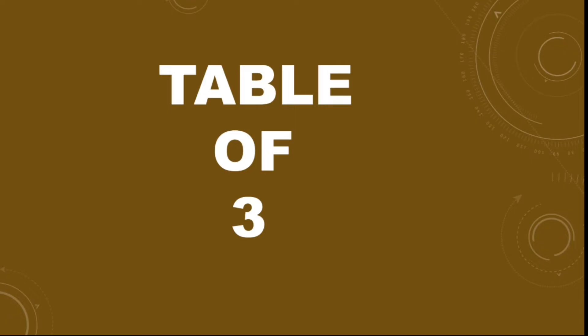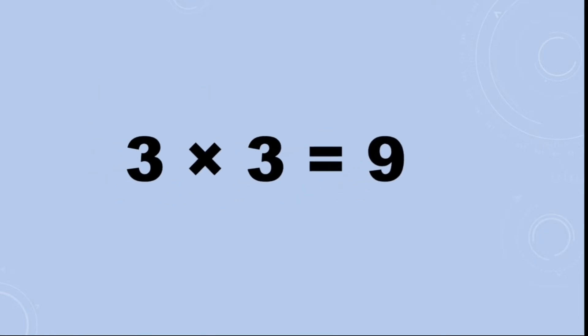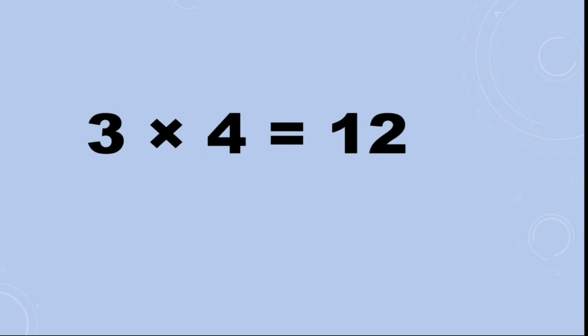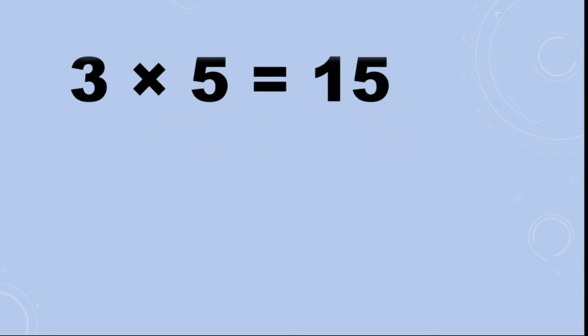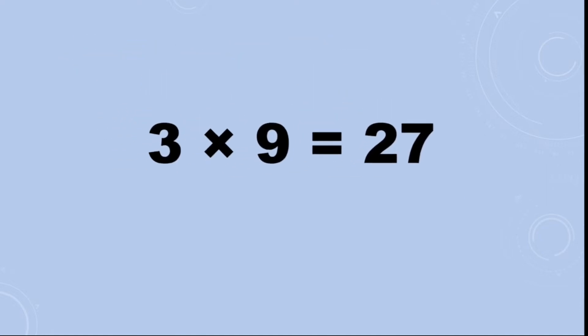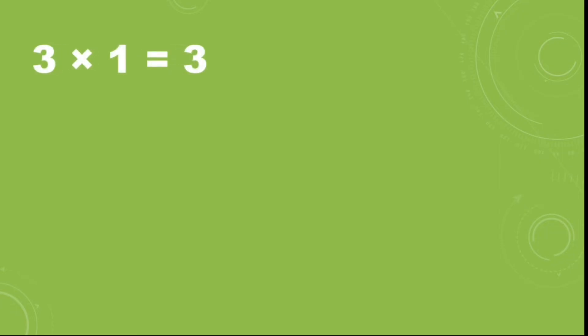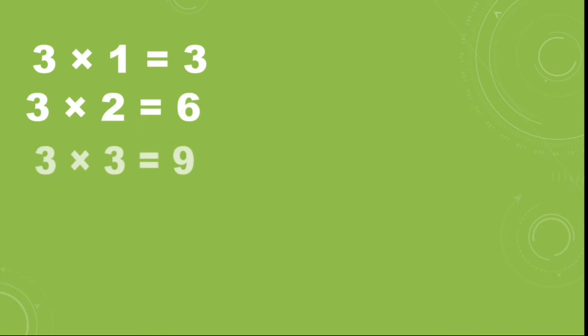Table of three. Three ones are three, three twos are six, three threes are nine, three fours are twelve, three fives are fifteen, three sixes are eighteen, three sevens are twenty-one, three eights are twenty-four, three nines are twenty-seven, three tens are thirty.